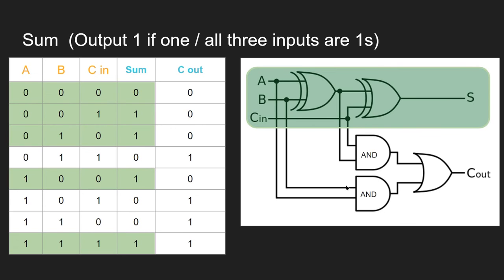So how do we implement that using logic gates? It's a little bit more complicated than the half adder. The first thing we need to handle is if all of them are off, or if only one of the inputs is on — either A or B or C, but not more than one. The way we do that is we use two exclusive OR gates connected together, which function as one combined exclusive OR, so that if A or B or C are on but only one of each, it will output a 1 to the SUM. Otherwise it outputs a 0.